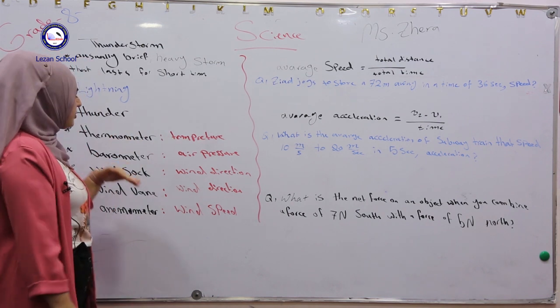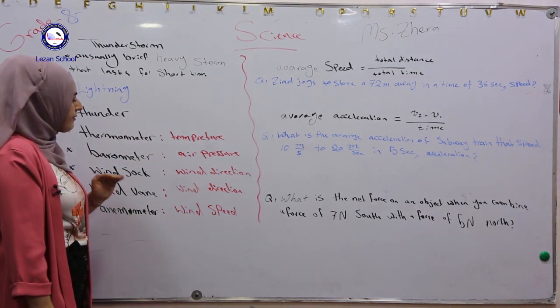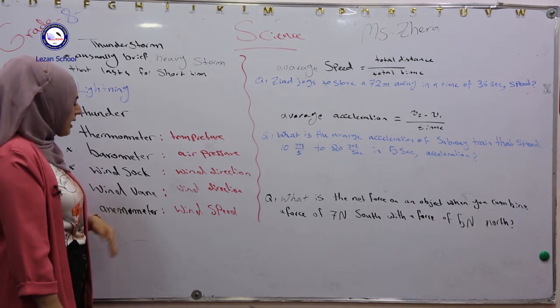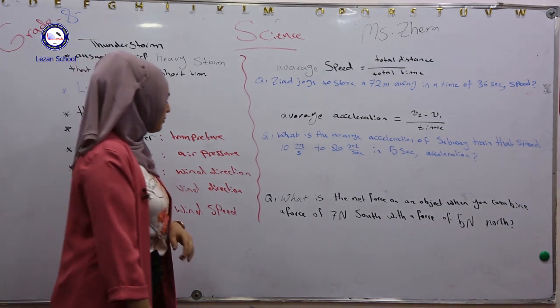Thermometer for temperature, barometer for air pressure, wind sock and wind vane measure wind direction, and anemometer can be used to measure wind speed.